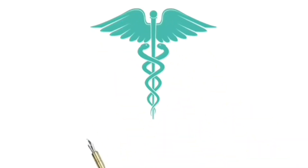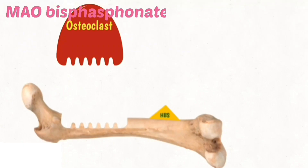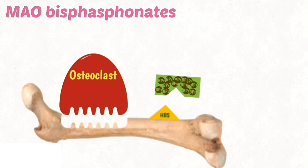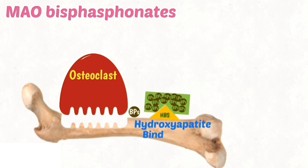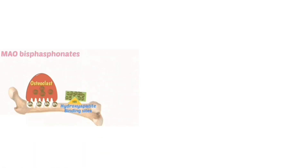Welcome to my channel Doctors Goal. Let's talk about the mechanism of action of bisphosphonates. Bisphosphonates attach to the hydroxyapatite binding site and release the bisphosphonate component. Bisphosphonates inhibit the attachment of osteoclasts to bone, and osteoclasts are fragmented by bisphosphonates.